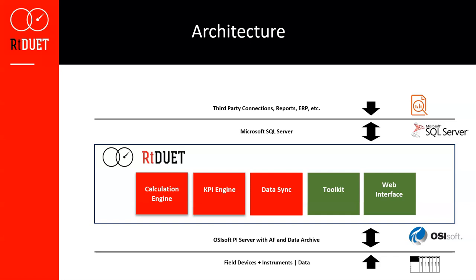The Data Sync Engine takes all RTDuet data stored in AF and syncs it to a SQL Server database. The Toolkit is the application used to configure the system, including the reason tree, time usage model, and triggers. The Web Interface is the primary interface for the majority of users — it's where you do all event maintenance and visualize your KPIs. RTDuet data synced to SQL Server can then be used by reporting tools such as Power BI, Tableau, or Excel, and can be combined with data from other systems such as an ERP.